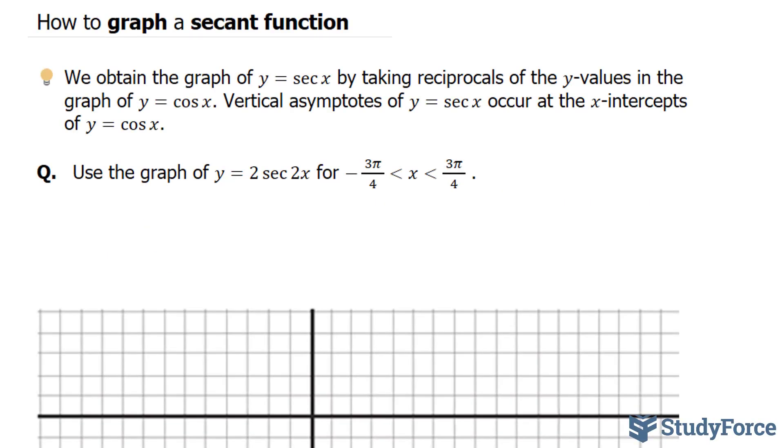In this lesson, I'll show you how to graph a secant function. We obtain the graph of y equals secant x by taking reciprocals of the y-values in the graph y equals cosine x. Vertical asymptotes of y equals secant x occur at the x-intercepts of y equals cosine x.